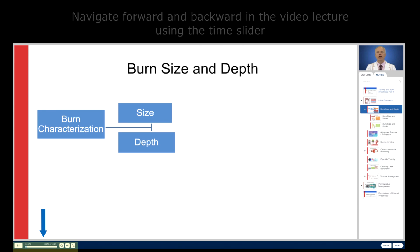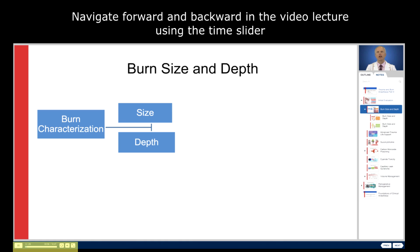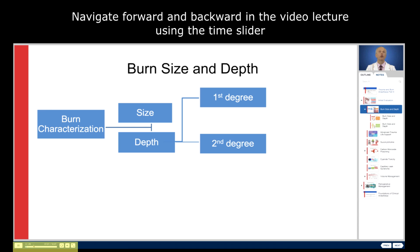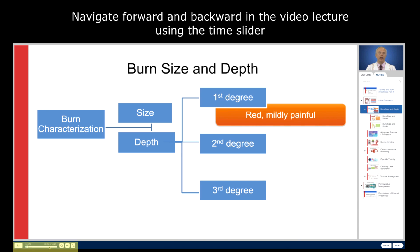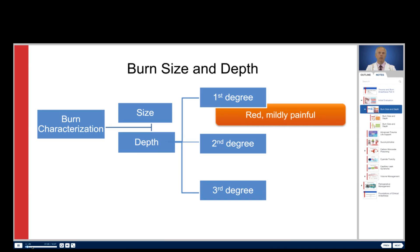In the past, burn depth was classified by clinical characteristics and referred to as first, second, or third degree burns. First degree burns were red and mild to moderately painful.